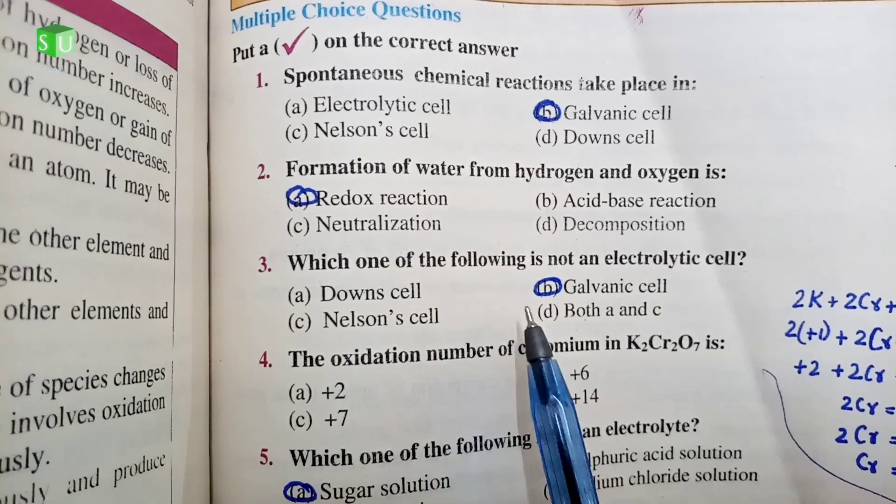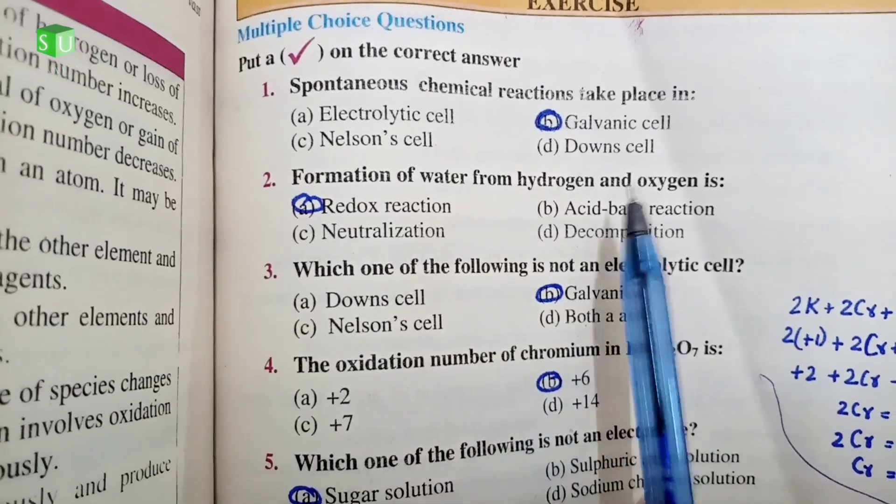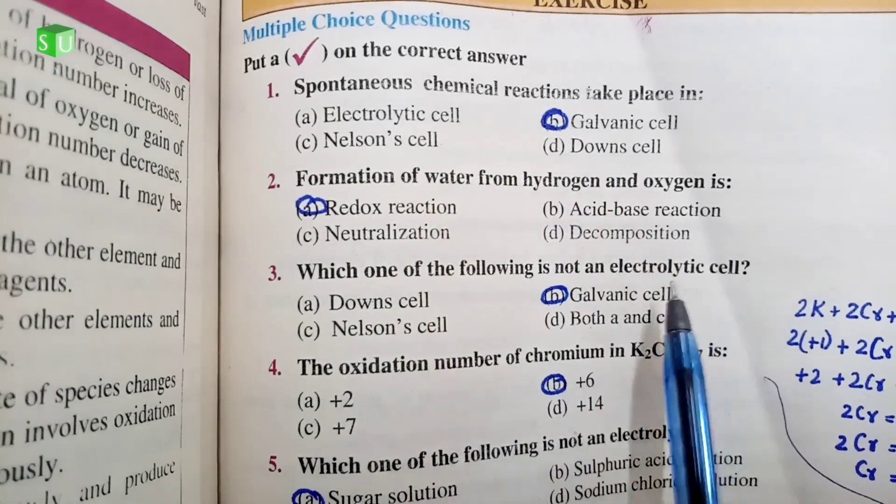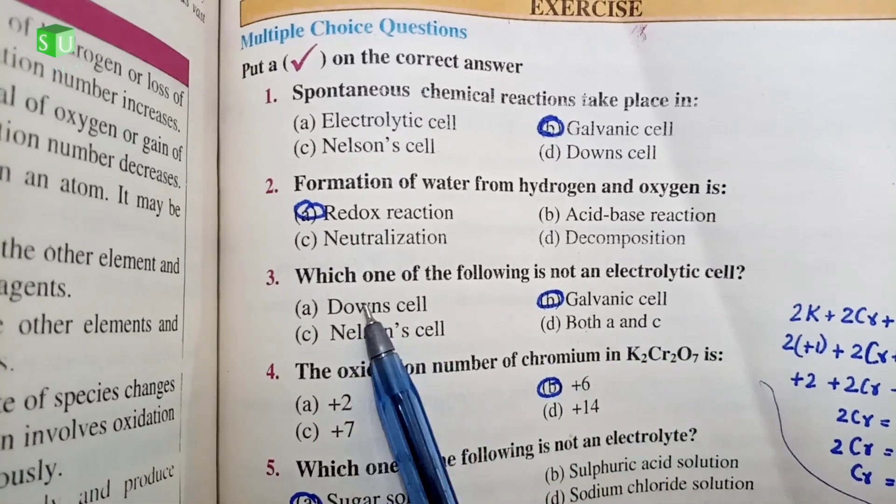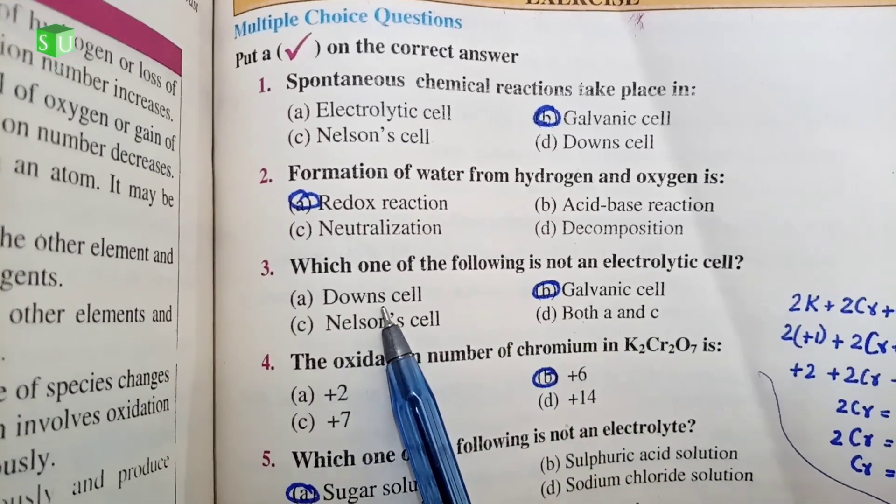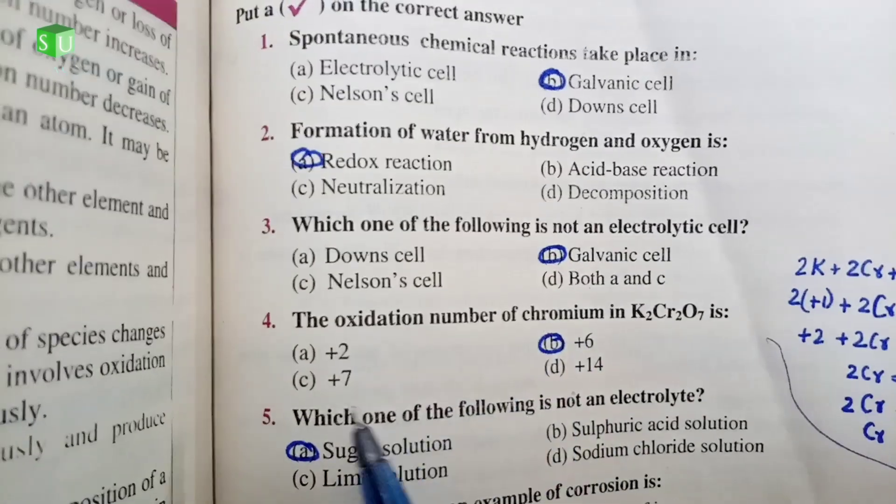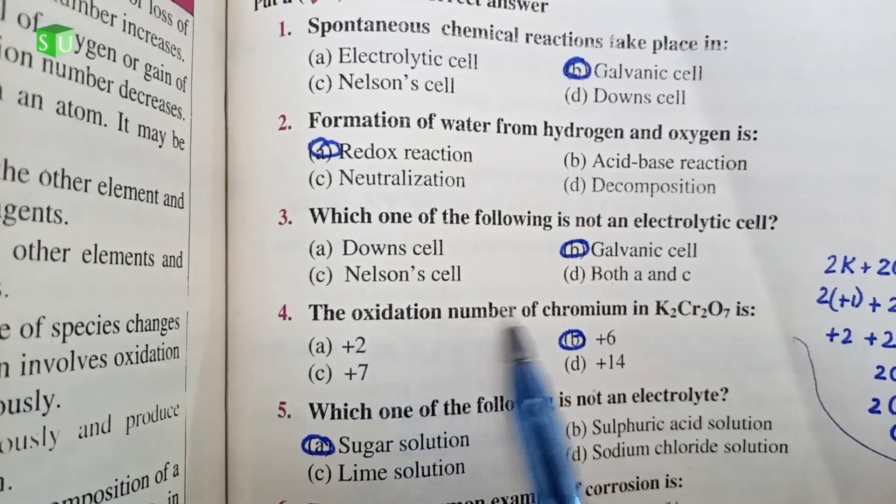Number 3: Which one of the following is not an electrolytic cell? Electrolytic cell requires energy.